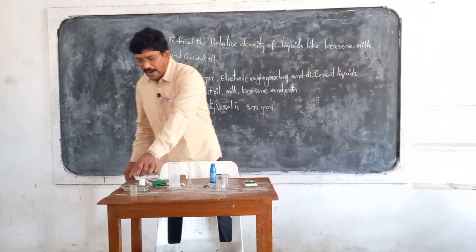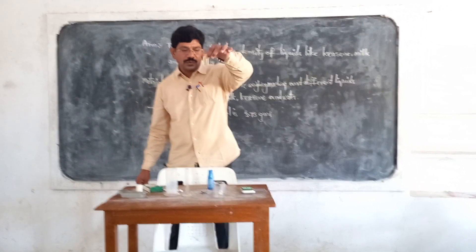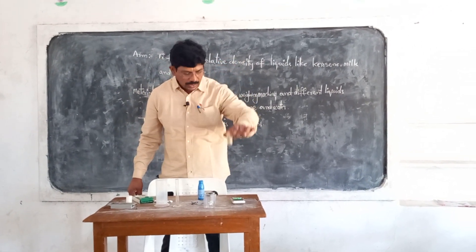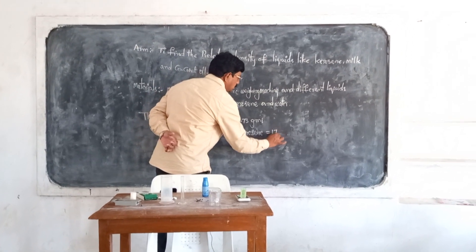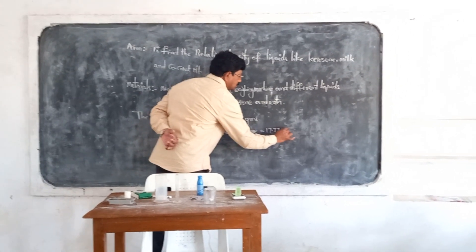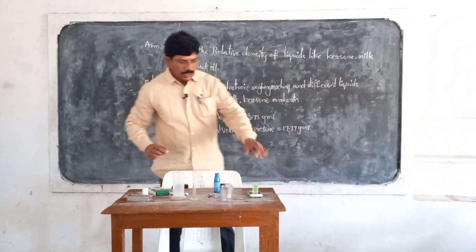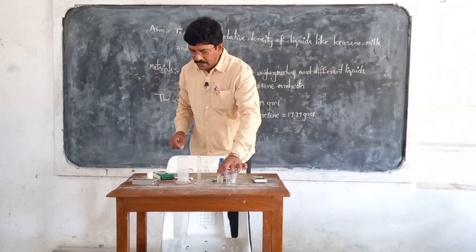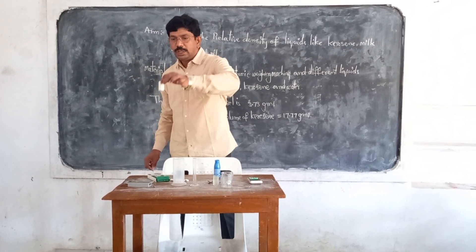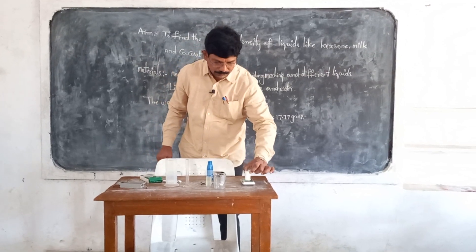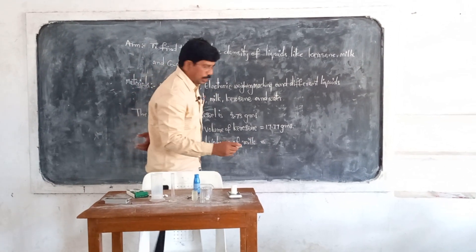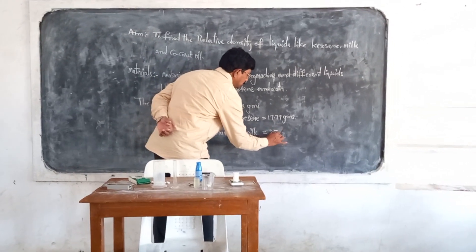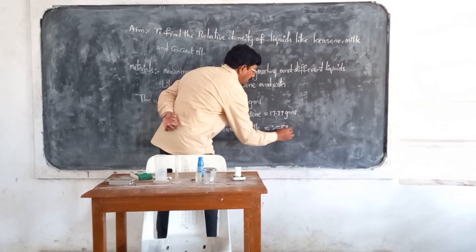Now I am finding the weight of kerosene. The weight of equal volume of kerosene is 17.77 grams. Next, the weight of equal volume of milk is 25.58 grams.